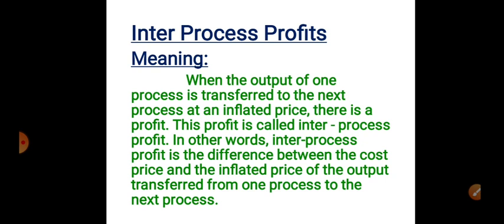When output is transferred to the next process at an inflated price — that is, invoice price or cost plus profit — there is an inter process profit. For example, if output of process A is 10,000 rupees and we add 10% profit (10,000 × 10% = 1,000 rupees), then the input for process B becomes 11,000 rupees. This inflated price is cost plus profit.